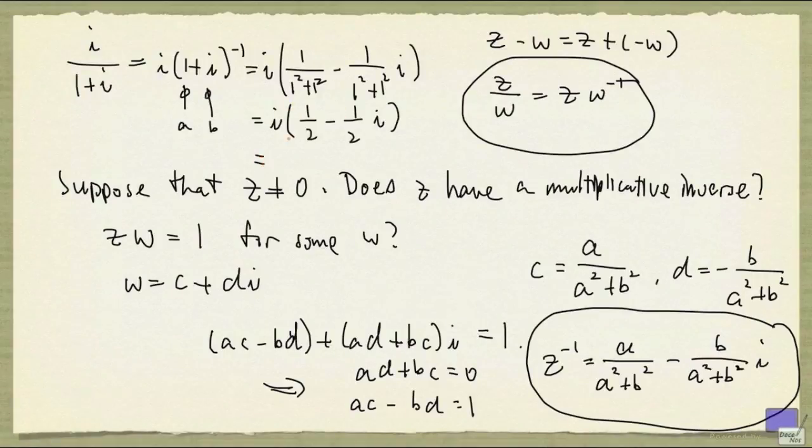And now I can multiply this out. So i times 1 over 2 is 1 over 2i. And i times negative 1 over 2i is negative 1 over 2i squared. But i squared is minus 1. So this is simply 1 half. So that's the answer in the form that we want.